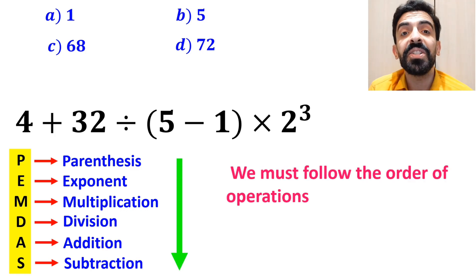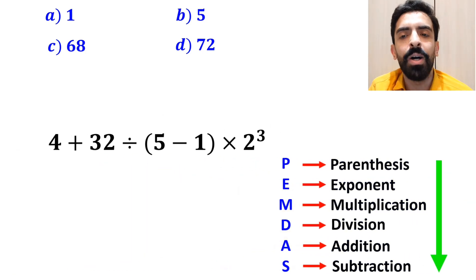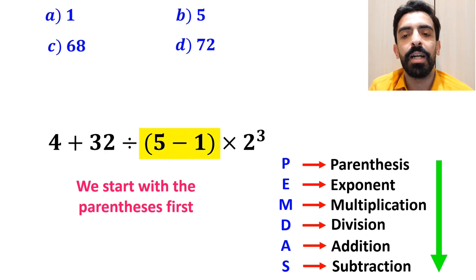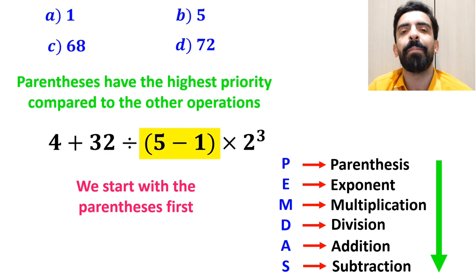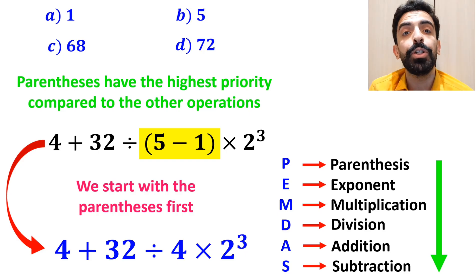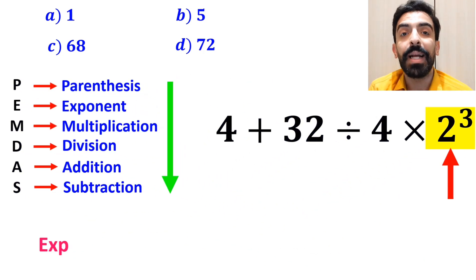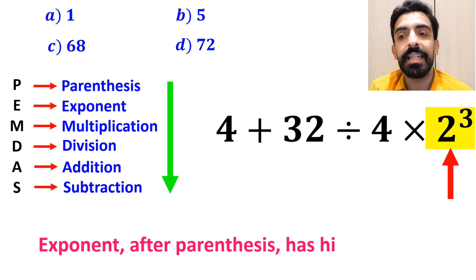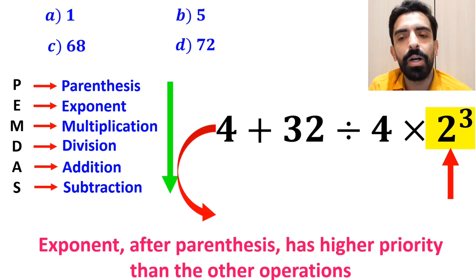So we will start with the parenthesis first, because parenthesis have the highest priority compared to the other operations. Instead of this expression, we can write 4 plus 32 divided by 4 times 2 to the power of 3. The next step, we go to the exponent, because exponent after parenthesis has higher priority than the other operations. So this expression simplifies to 4 plus 32 divided by 4 times 8.